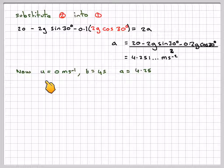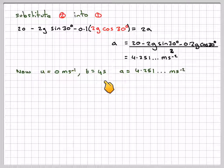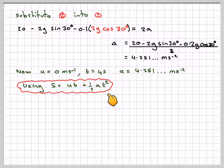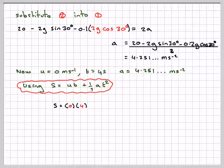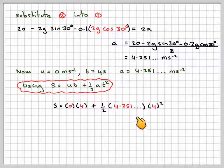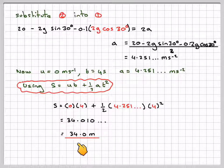Now, the thing starts from rest, we want to know the distance travelled in 4 seconds, we now know the acceleration is 4.251 metres per second squared. So using s equals ut plus half at squared, we're going to have s equals 0 times 4 plus half times 4.251 times 4 squared. Don't round off prematurely, otherwise you'll make a mistake. That gives 34.010, which correct to three significant figures is 34 metres.